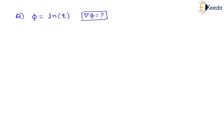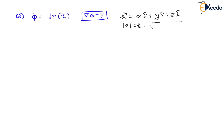Now r is a position vector. Therefore r is nothing but the position vector x·i + y·j + z·k. Therefore let us find the magnitude of r, because the gradient is defined for a scalar quantity only but r itself is a vector quantity. The magnitude of r, also written as r, is equal to the square root of x² + y² + z², which can also be written as (x² + y² + z²)^(1/2).